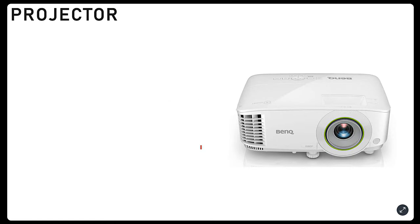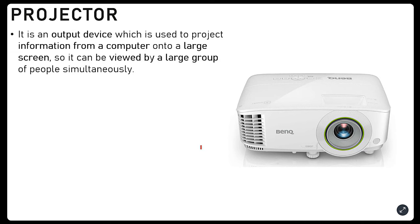Then there is a projector — it is an output device and it produces a soft copy output. It is used to project information from a computer onto a large screen. This is like your monitor screen, but projected onto a wall or large screen. We use it so that more people can see the display at the same time. If you want to show visuals to a large group of people in a seminar hall or in a classroom, you will use a projector.